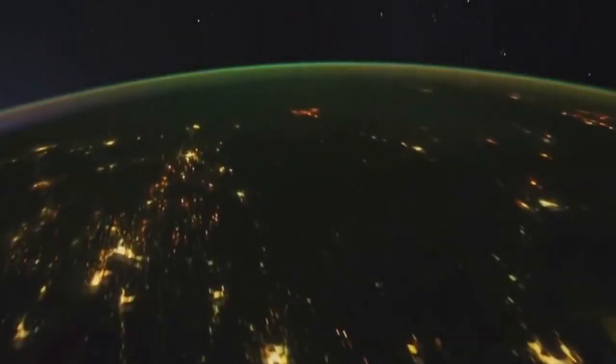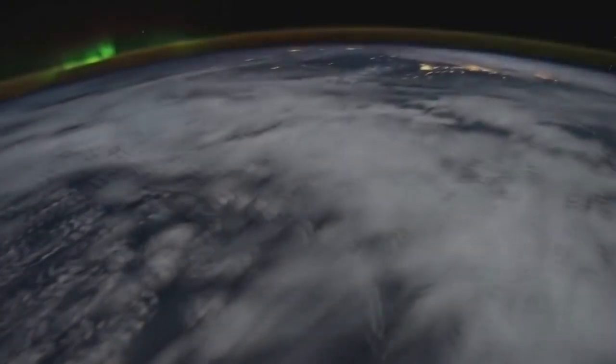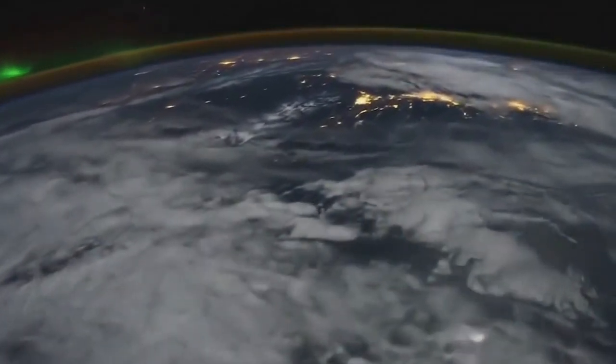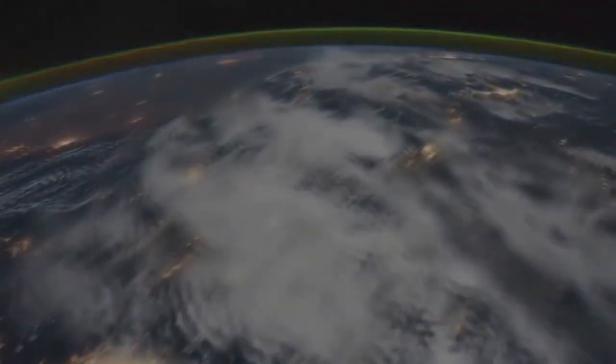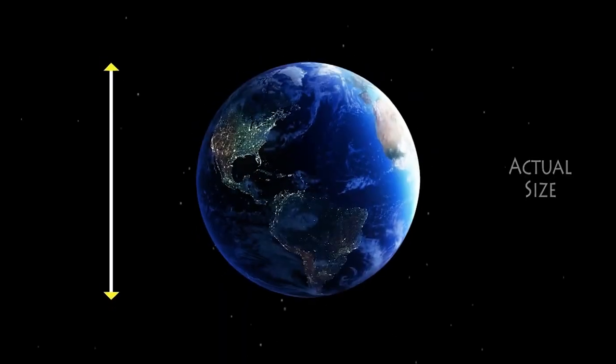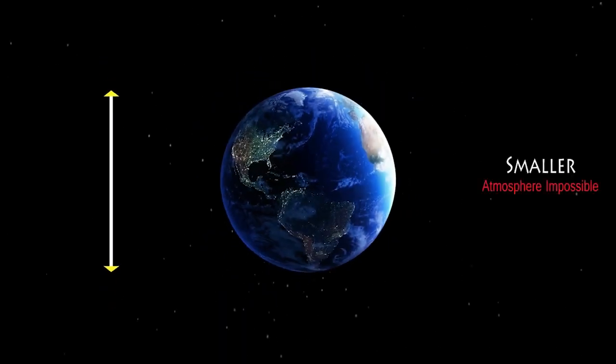The Earth's size and its corresponding gravity holds a thin layer of mostly nitrogen and oxygen gases, only extending about 50 miles above the Earth's surface. If Earth was smaller, an atmosphere would be impossible.